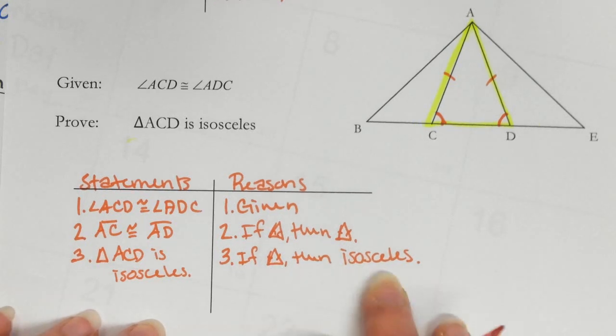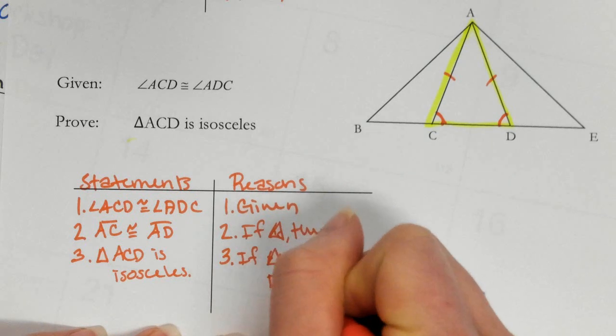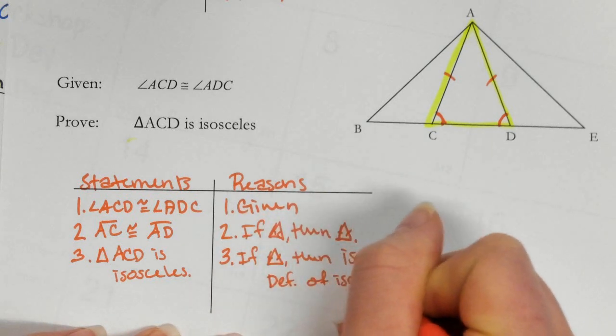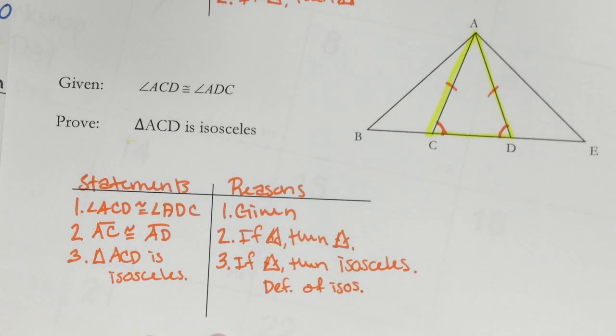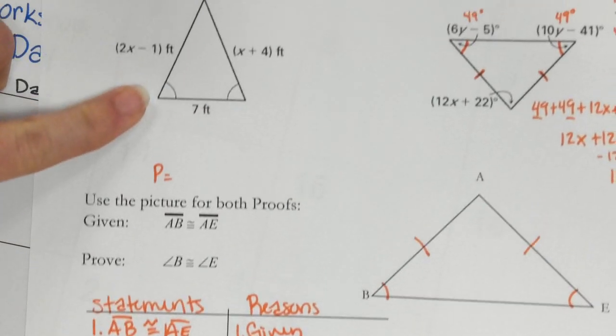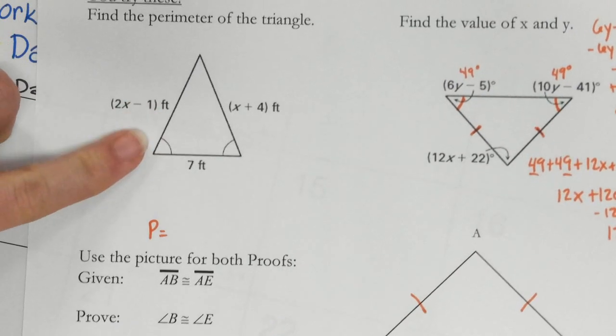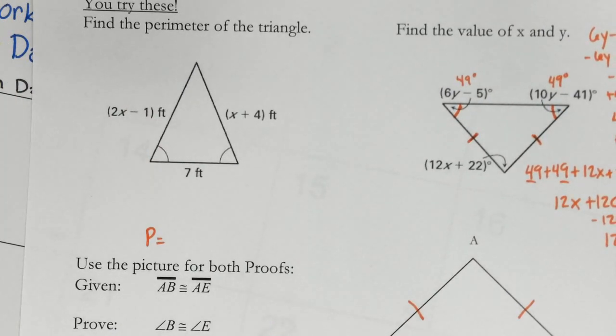So these two proofs weren't very hard. We had to make sure we remember our if-then statements. This one, number three, is kind of the same. You could say definition of isosceles if you wanted to. They're going to be the same thing. So remember to show your teacher your answer for this one, and then you'll get your worksheet.